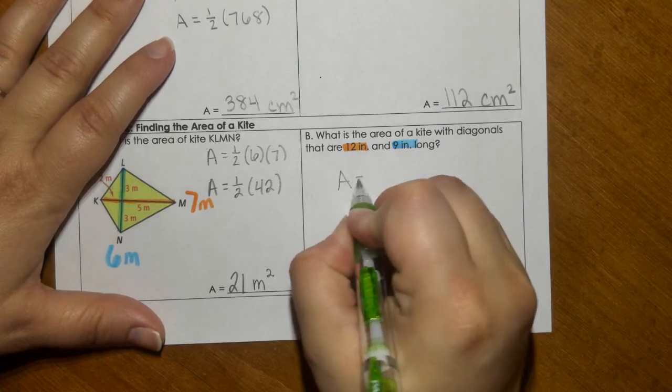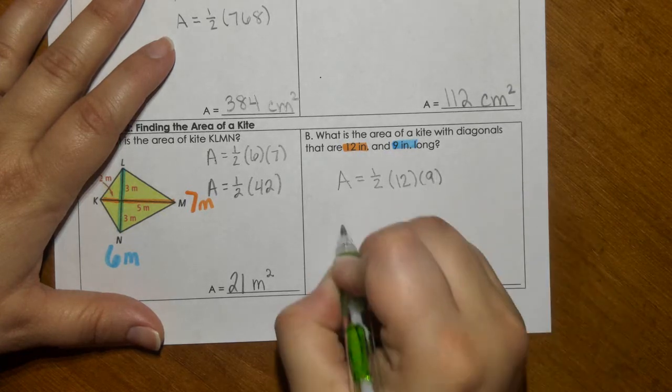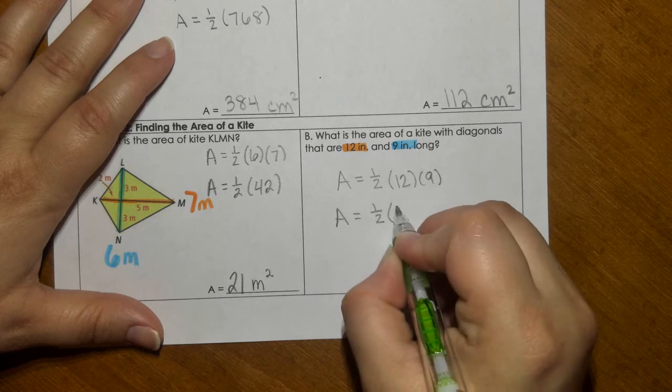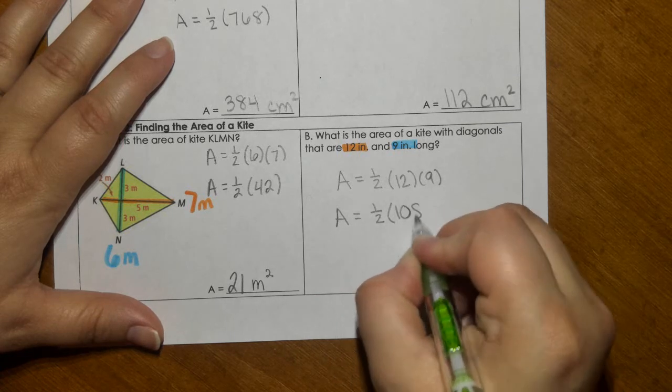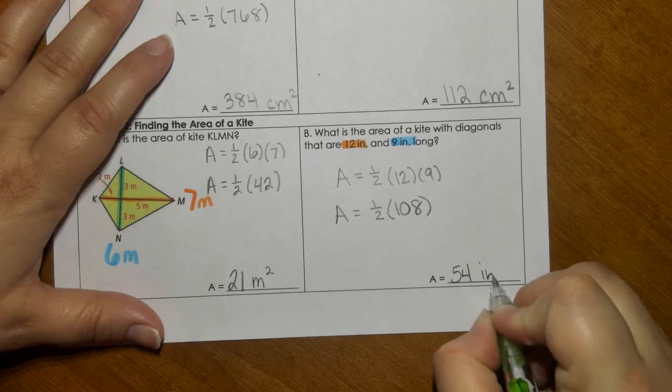So again, just plugging it into the formula, we would have 108 divided by 2 is 54 inches squared.